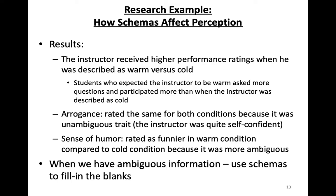The guest lecturer then conducted a class discussion for 20 minutes and students rated their impressions of him. The instructor received higher performance ratings when described as warm versus cold, explained by the use of a schema. Students who expected the instructor to be warm asked more questions and participated more. Arrogance was rated the same in both conditions because it was an unambiguous trait — the instructor was quite self-confident, so schemas weren't needed to fill in the blanks. Sense of humor, being a more ambiguous trait, was rated as funnier in the warm condition, because warmth and humor are both positive traits and it seems likely someone warm would also have a better sense of humor. The research concluded that when we have ambiguous information, we use schemas to fill in the blanks.